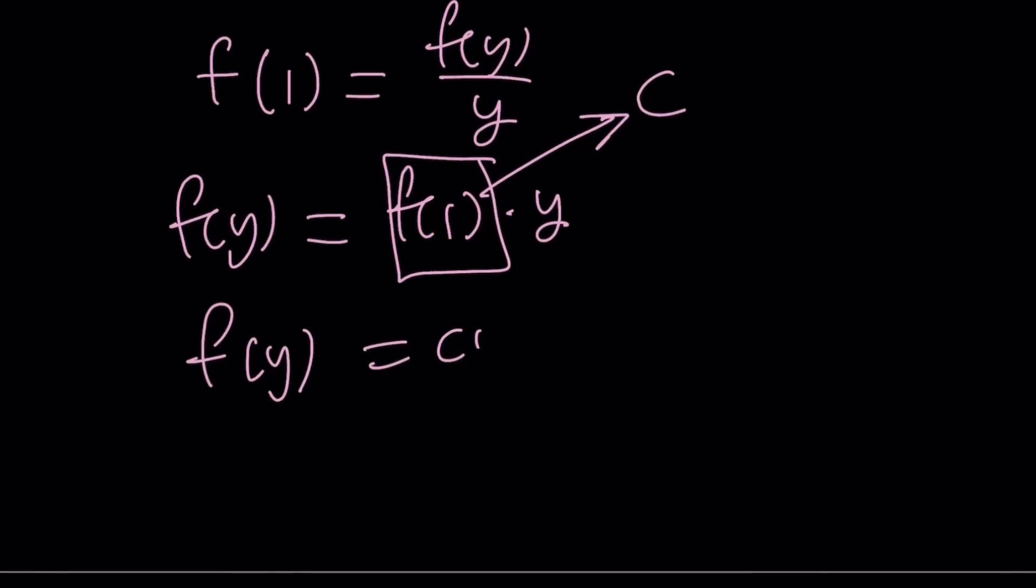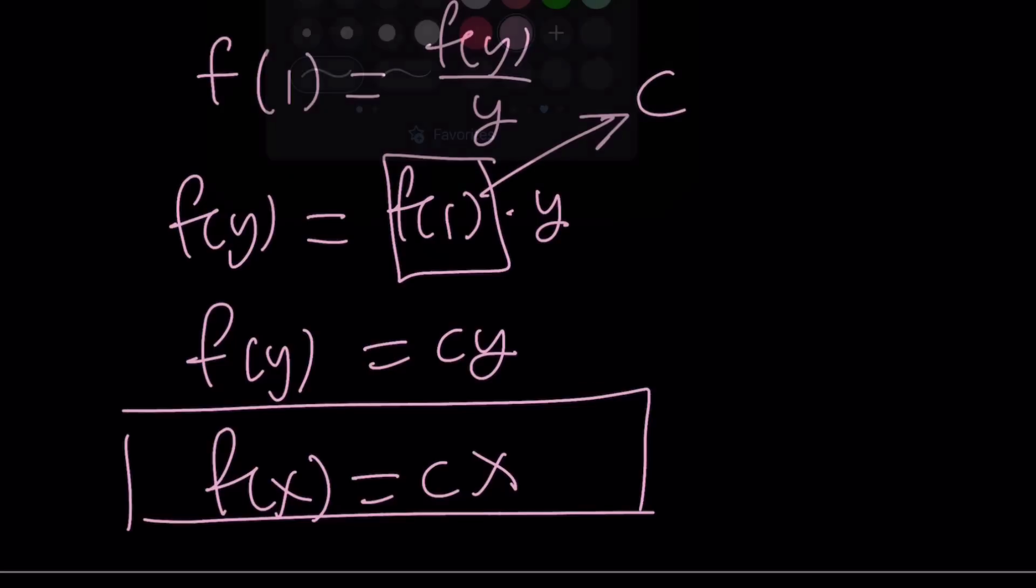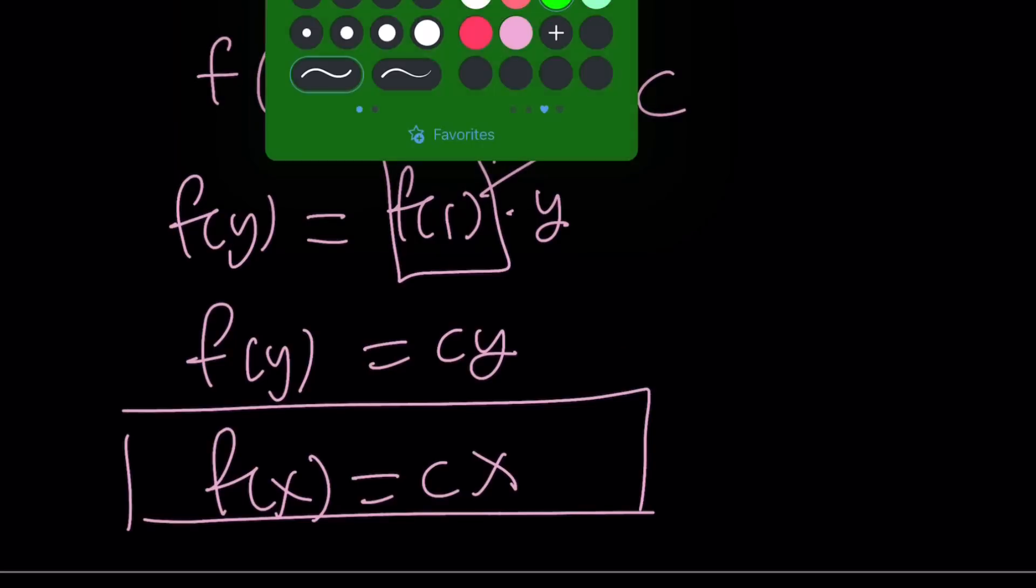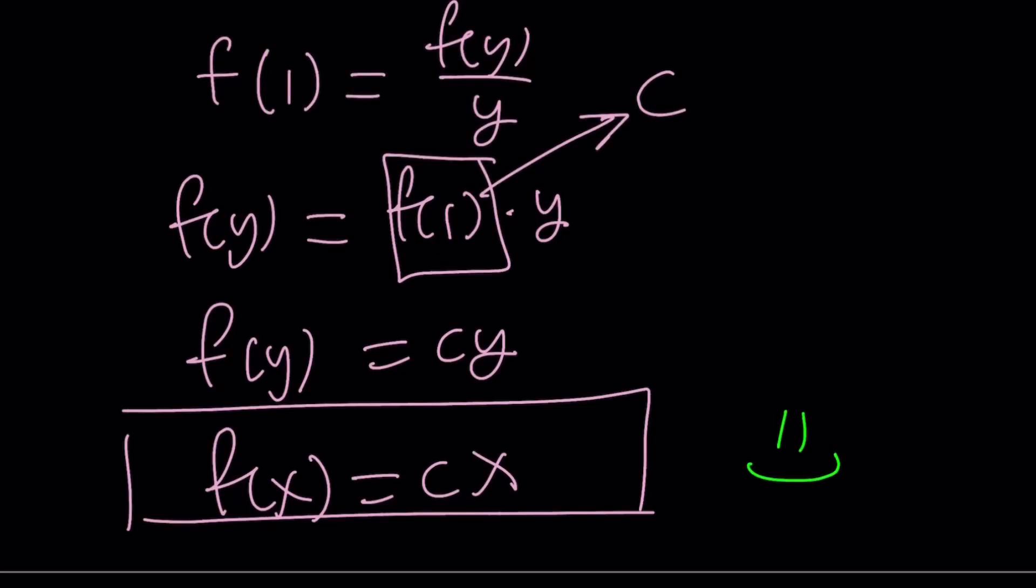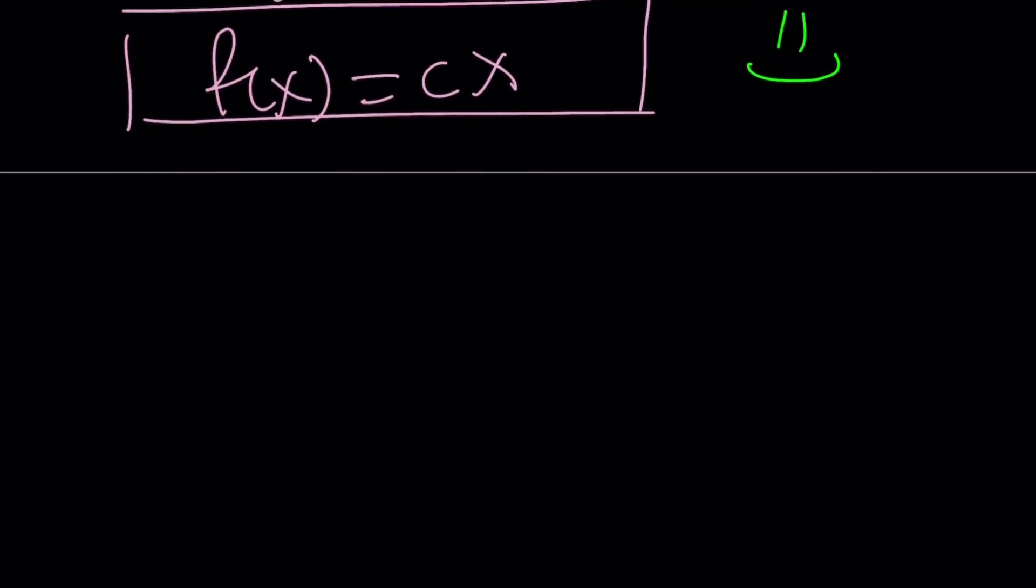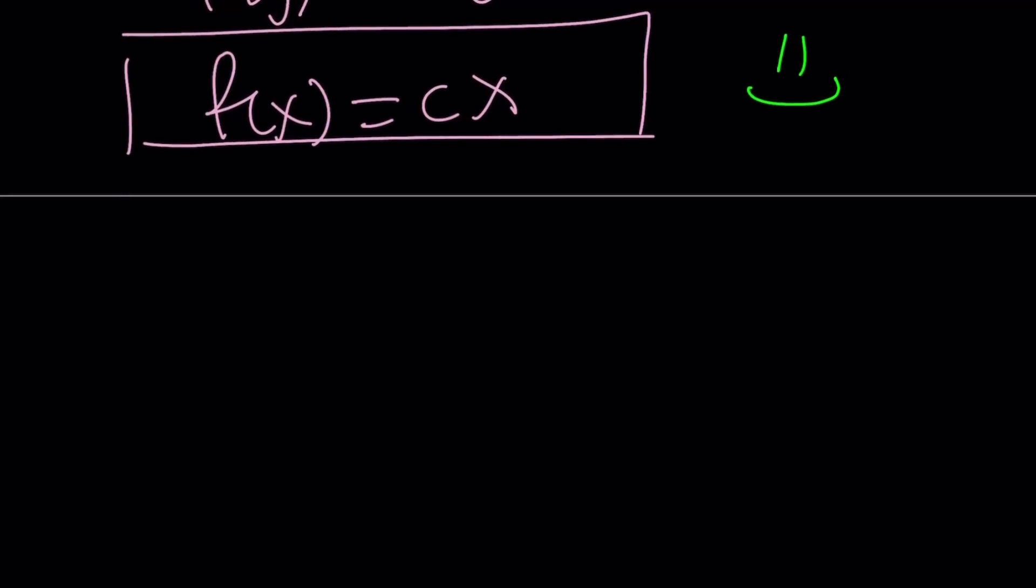f of y equals c y, which means f of x equals c x. And that's going to be the only solution for this functional equation. Great. And this brings us to the end of this video. Thank you for watching. I hope you enjoyed it. Please let me know. Don't forget to comment, like, and subscribe. I'll see you tomorrow with another video. Until then, be safe. Take care. And bye-bye.